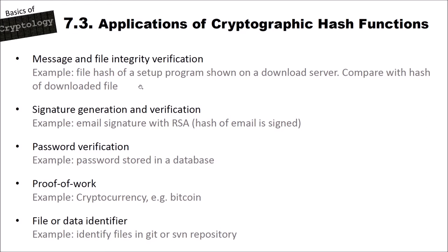The second application is signature generation and verification — for example, email signature with RSA. When you sign your email, you compute a hash value of the email and then sign it with RSA. The receiver also computes the hash of the email, then decrypts the signature using your public key. When the hash values are equal, the receiver knows the email comes from you and that the email has not been changed by someone else.